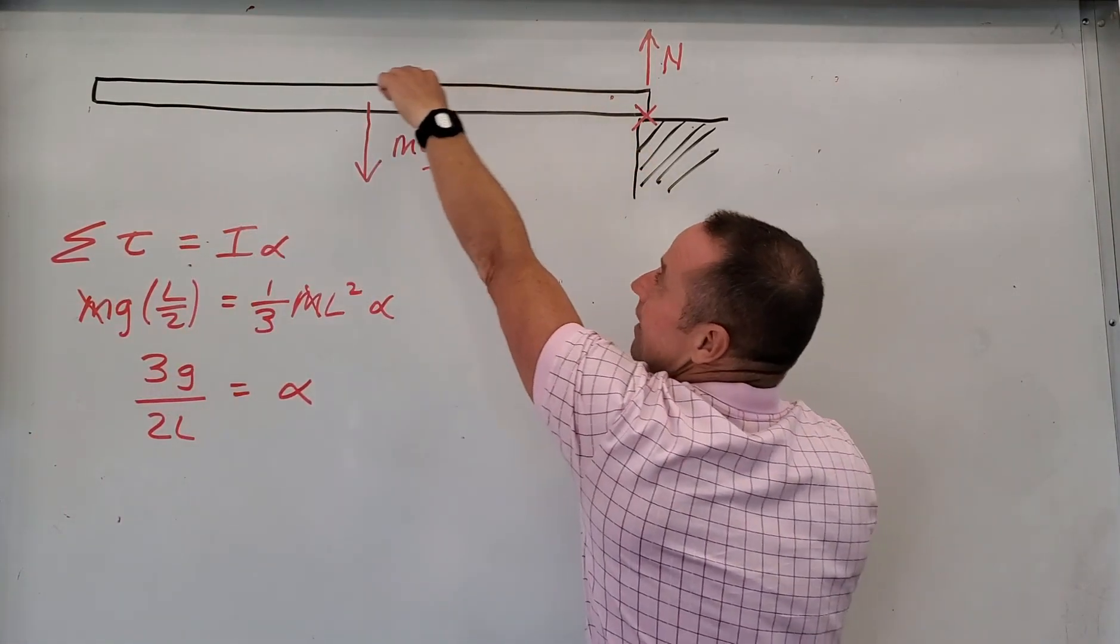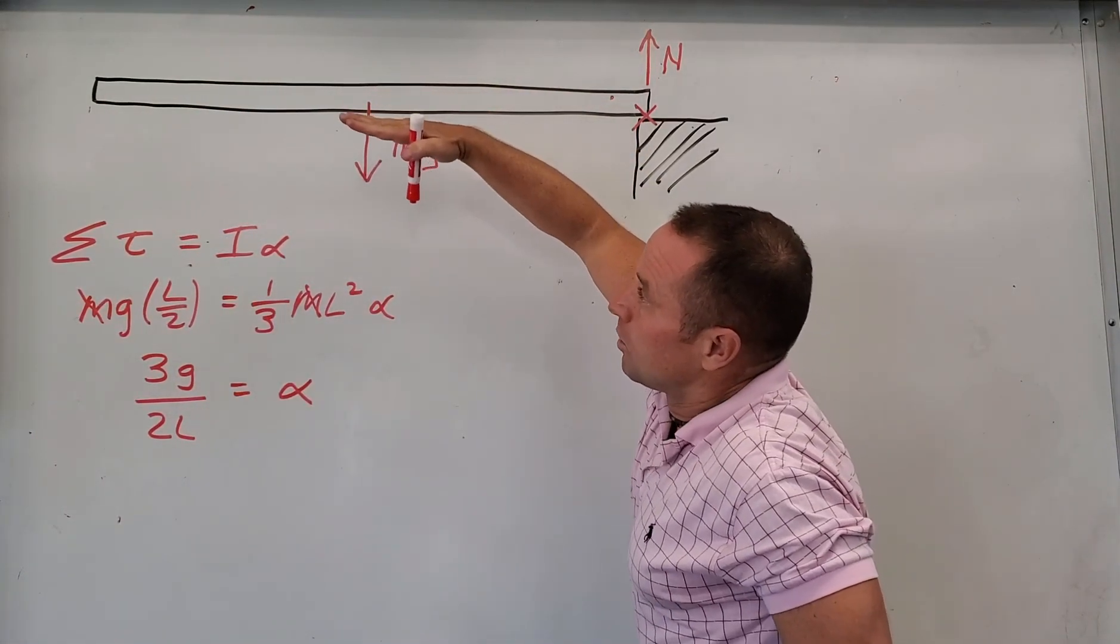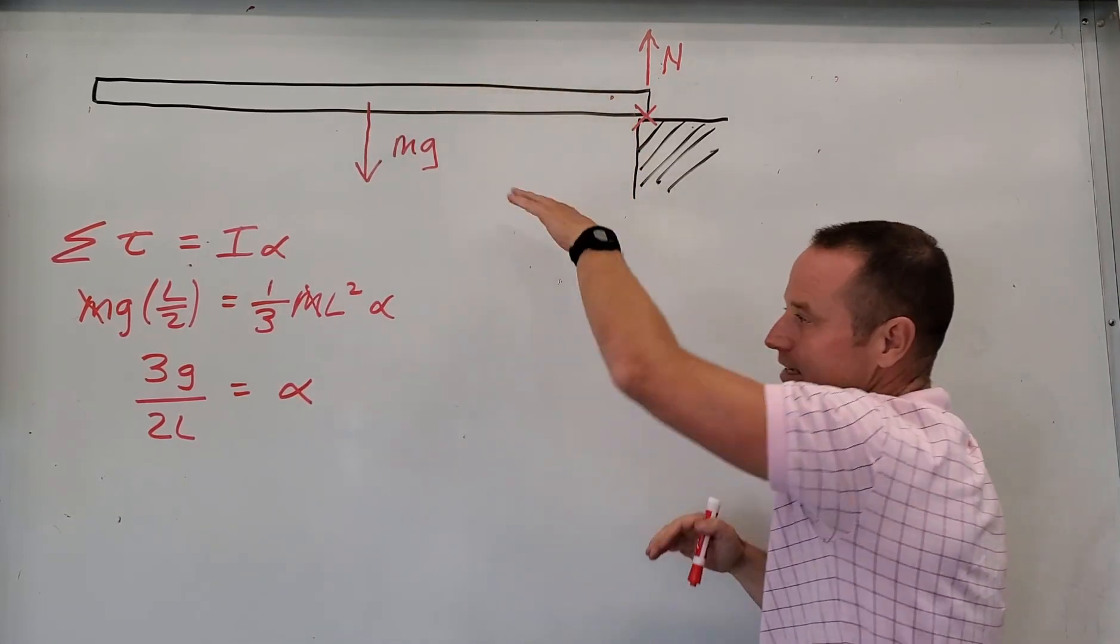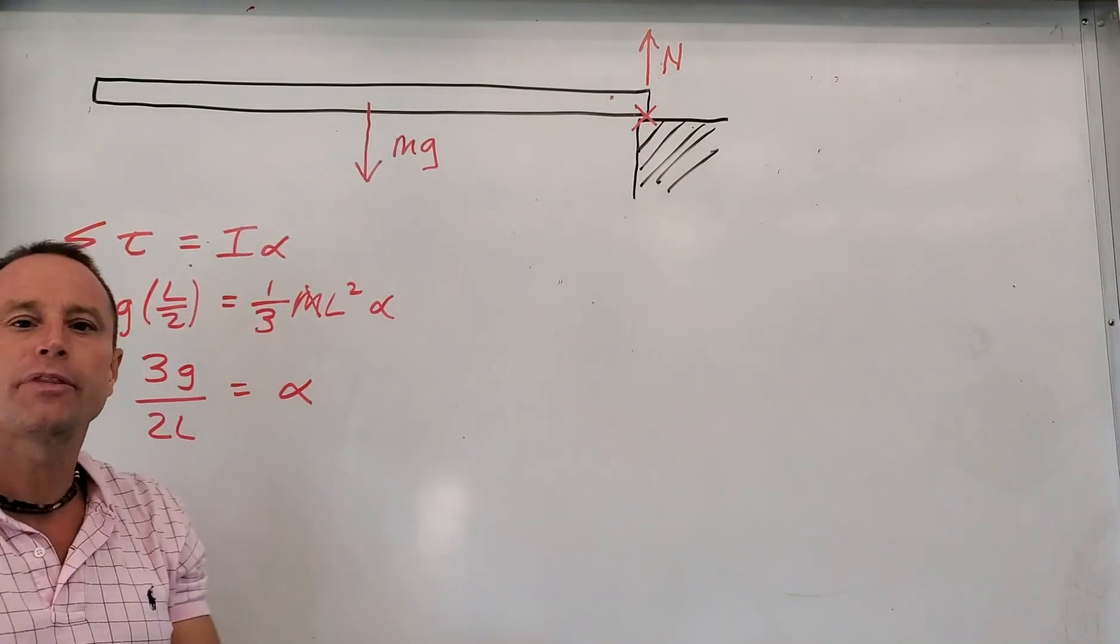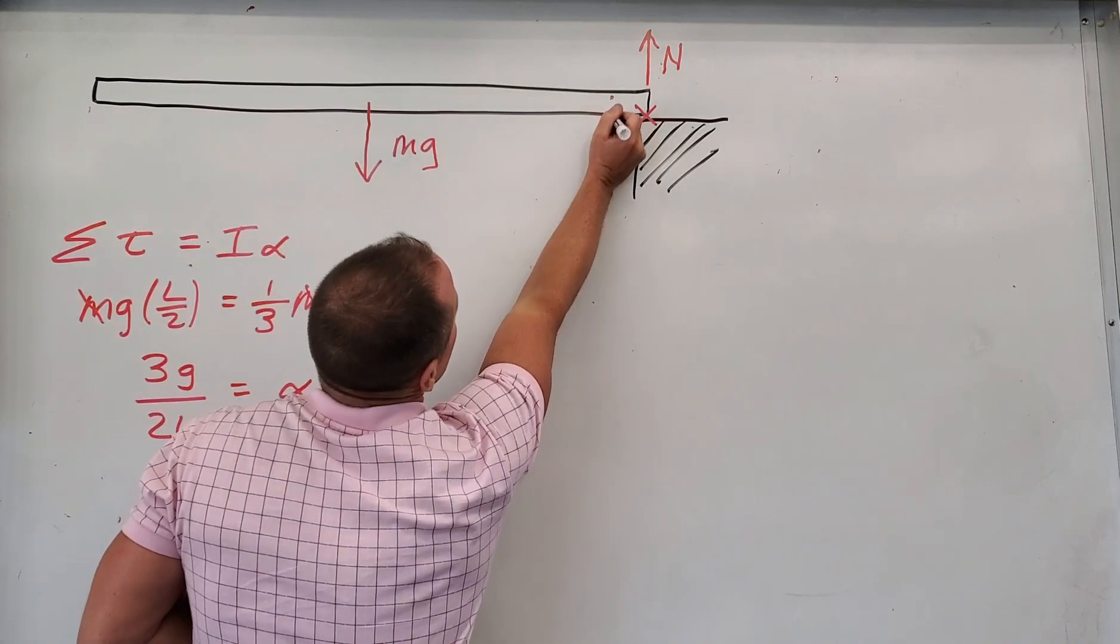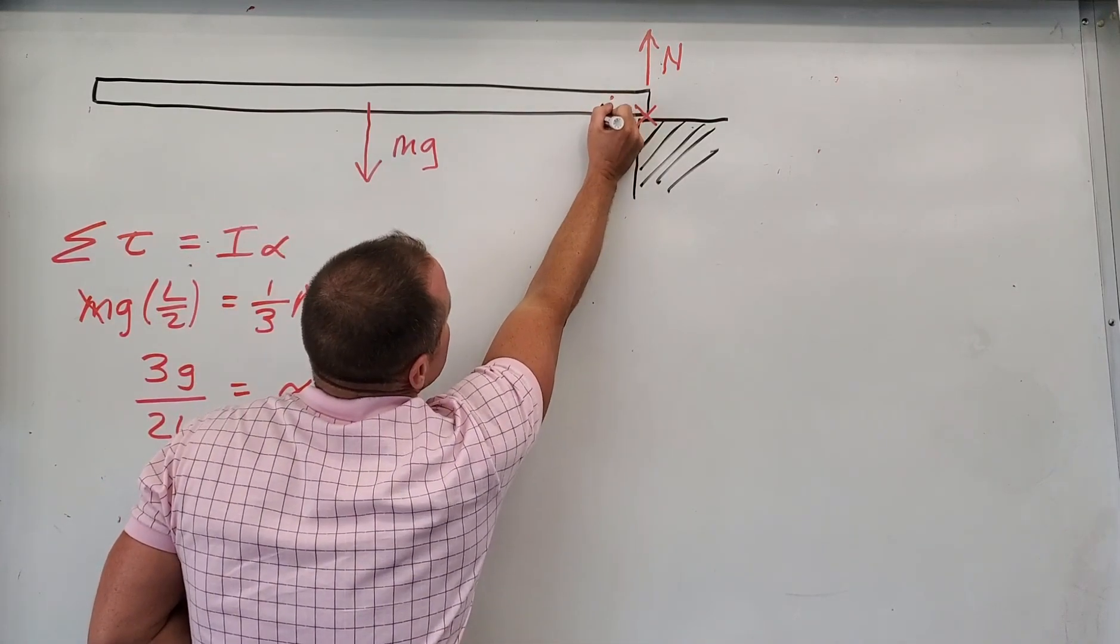Each point on the stick will turn together so every place on the stick has the same angular acceleration, but they will not have the same linear acceleration.